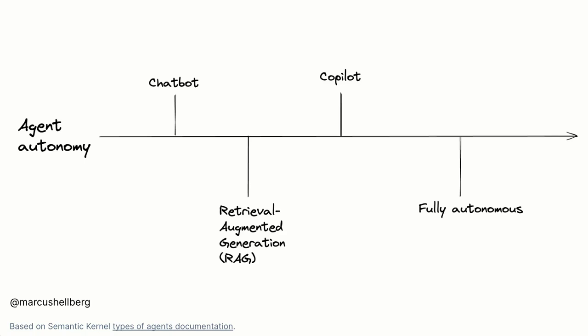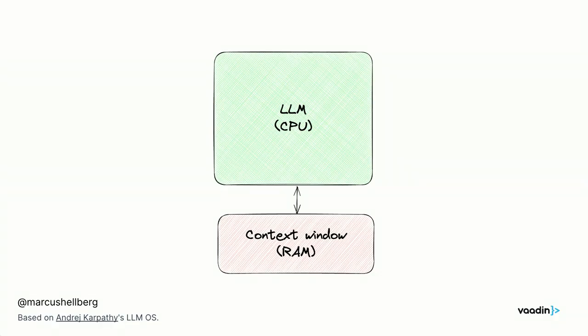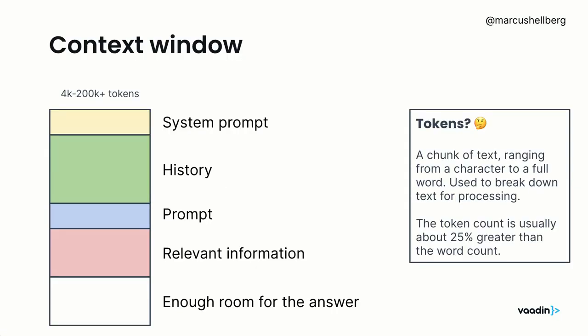Starting at the chatbot end of the spectrum: we have our LLM and just the context window. The context window is the working memory we have when conversing with a language model. It's measured in tokens — sub-words the LLM splits text into. Roughly, a 4,000 token window would be about 3,000 words of English, give or take depending on the model.